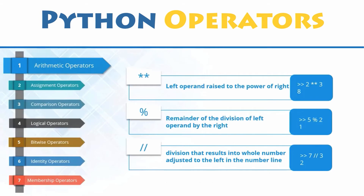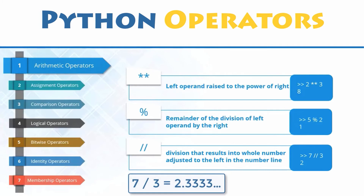Please note that the result of standard division is always a float, even if the dividend is evenly divisible by the divisor. Whereas the fractional portion of floor division is truncated off, leaving only the integer portion.